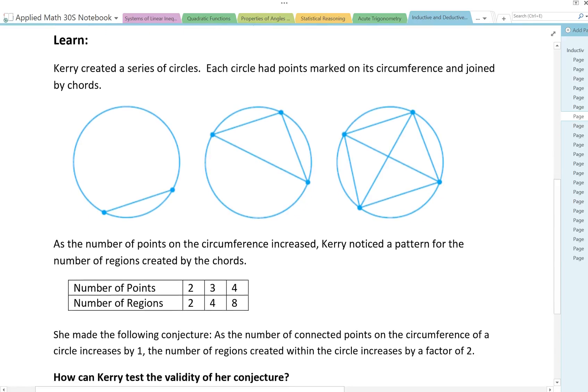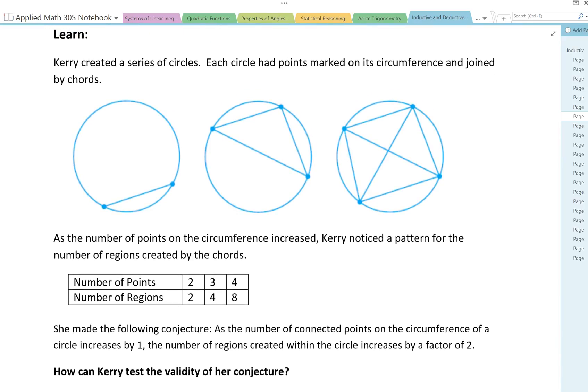Carrie created a series of circles. Each circle had points marked on its circumference and joined by cords. So we could see here the cords drawn. As the number of points on the circumference increased, Carrie noticed the pattern for the number of regions created by the cords. So number of points 2, the number of regions is 2. So this counts as a region and this counts as a region. So the cords separated the circle into 2 regions. When we had 3 points, we had 1, 2, 3, 4 regions.